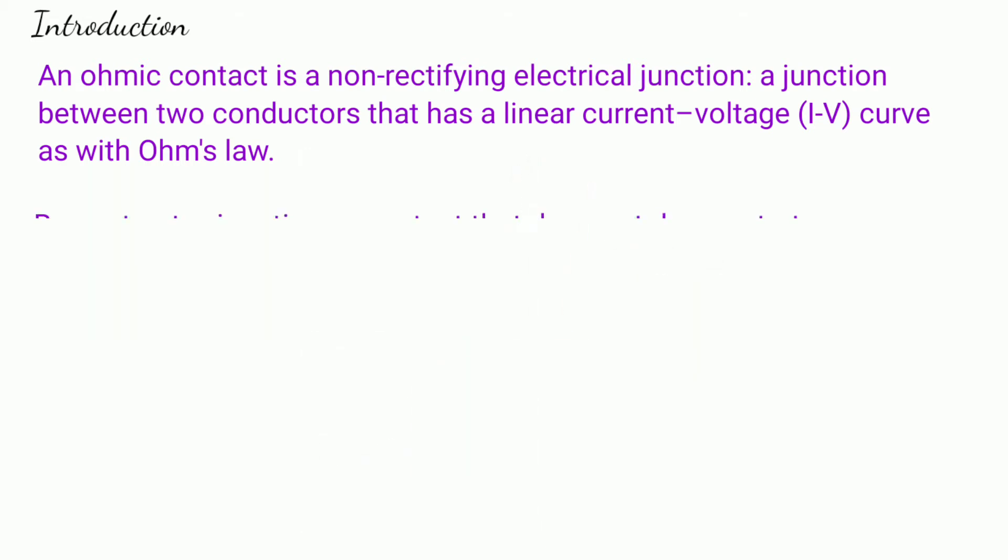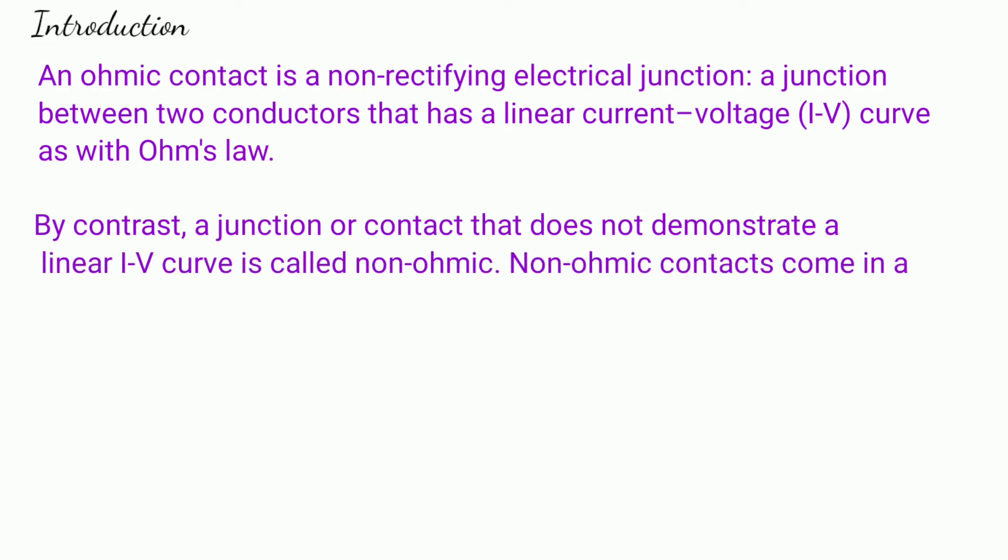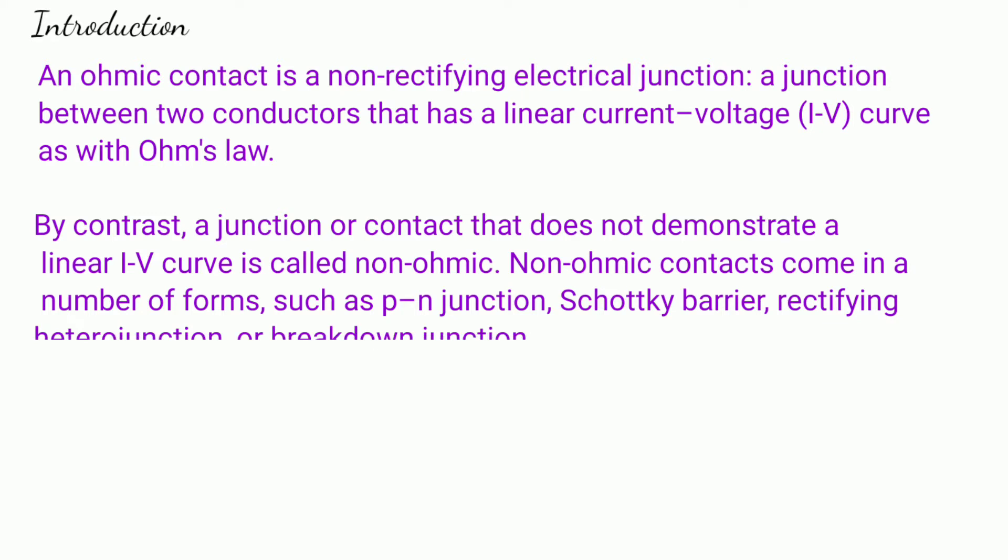By contrast, a junction or contact that does not demonstrate a linear IV curve is called non-ohmic. Non-ohmic contacts come in a number of forms such as PN junction, Schottky barrier, rectifying heterojunction, or breakdown junction.